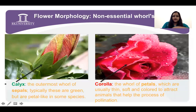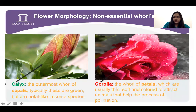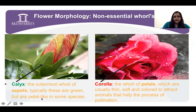Calyx is the outermost whorl. Here you can see this — this is the flower of hibiscus, in which this green portion is called calyx, the whole group. The single unit of this is called sepals. These are mostly typically green in color. Sometimes they are petal-like and colorful.